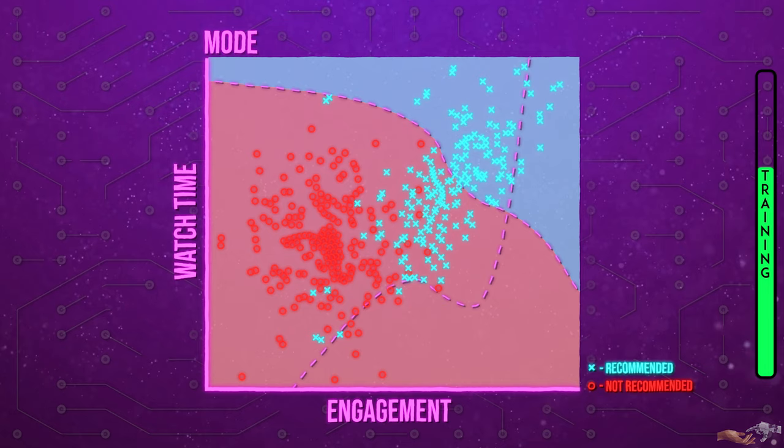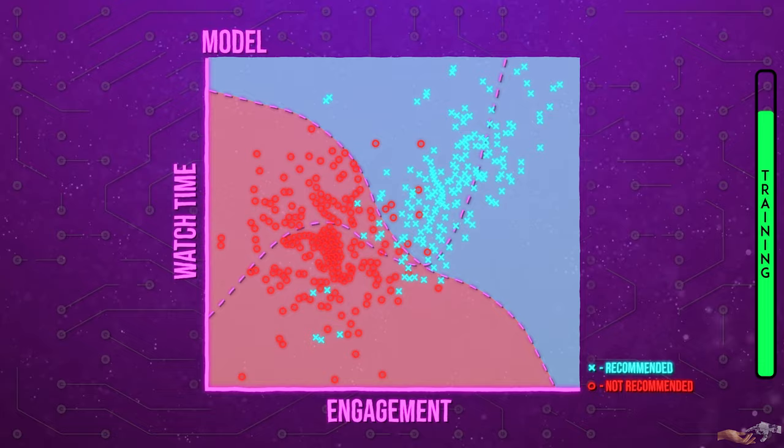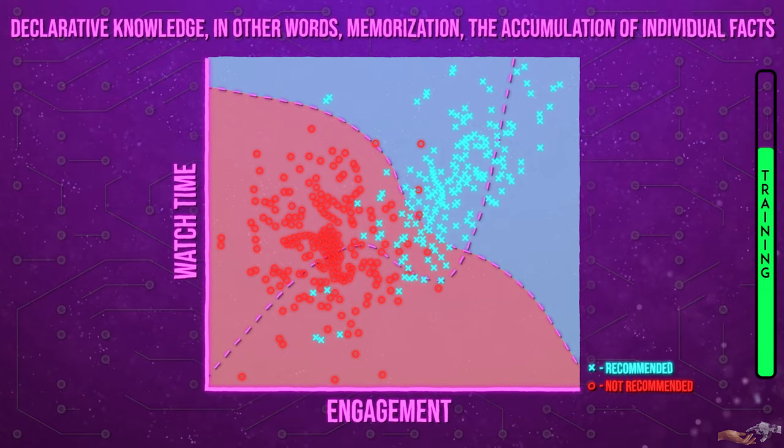This training of a model draws parallels to the first primary type of knowledge we as humans display, declarative knowledge, in other words memorization, the accumulation of individual facts. Once we have a trained model and it is exhibiting good accuracy on training data, then we can use that model for the next step, inference.